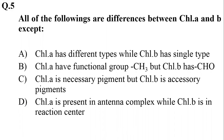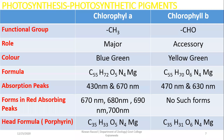All of the following are differences between chlorophyll A and B except: Chlorophyll A is present in the antenna complex while B is in the reaction center — this is a wrong statement. The other options (alpha, beta, charlie) are correct statements about differences. Chlorophyll A is the necessary pigment while B is the accessory pigment.